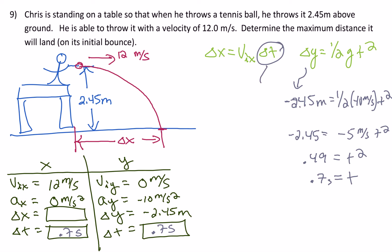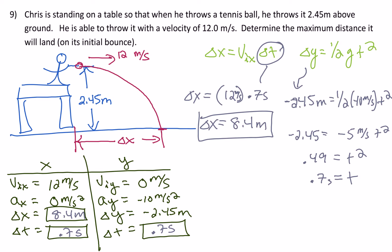Now that t is 0.7 seconds, I can solve for delta x. Initial velocity is 12 meters per second, so delta x equals 12 times 0.7 equals 8.4 meters. For tomorrow's quiz, make sure you're drawing pictures, listing your givens and unknowns, writing out your equations, and showing your substitution and work. Even if you get the right answer, points will be taken off if you don't show all of this. Hopefully this video helped — let me know if you have questions, and thanks for watching.